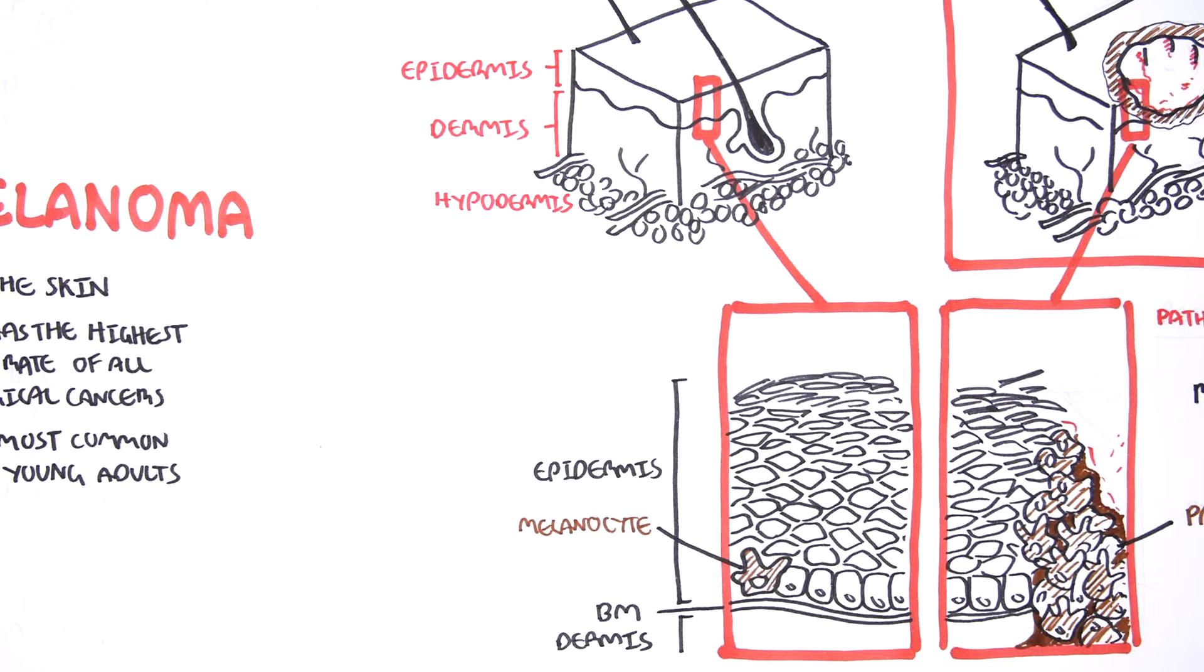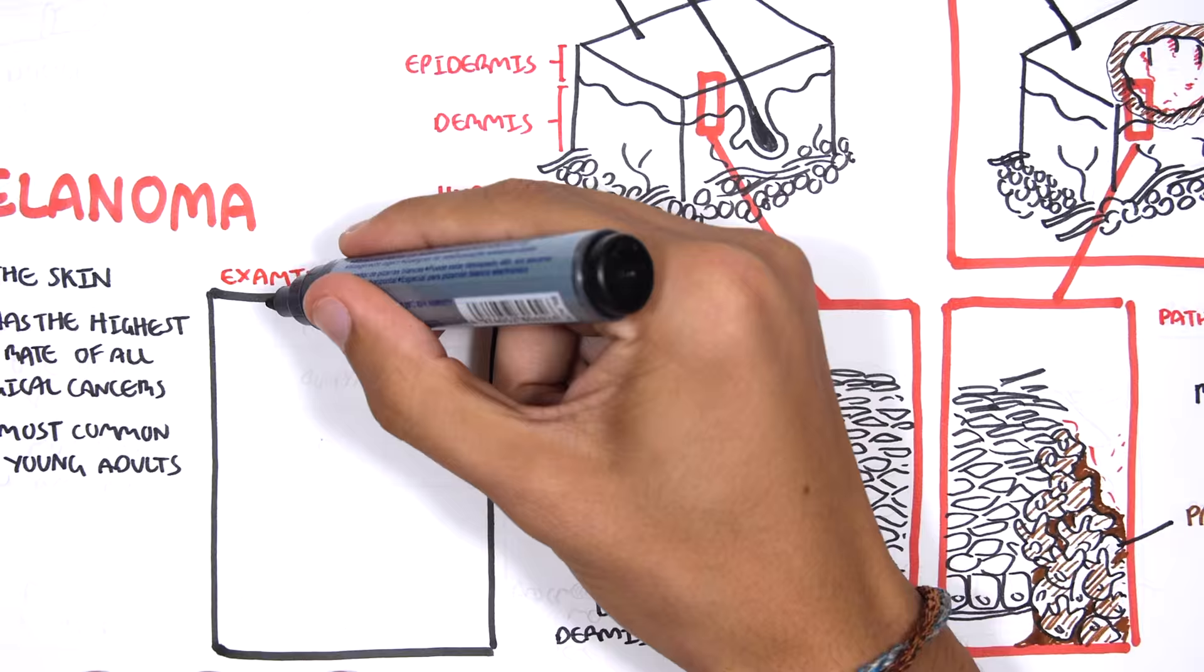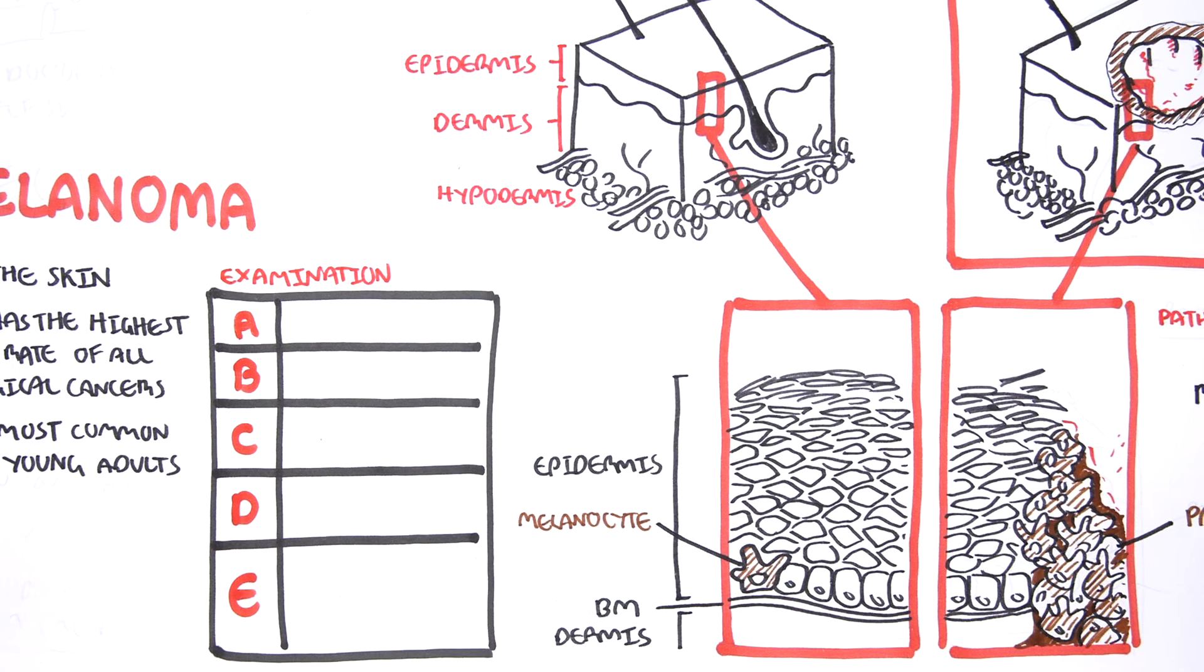When going to a doctor and is suspected of having melanoma, it is important to examine the skin lesion. A good way to examine the skin lesion is to follow the ABCDE rule.